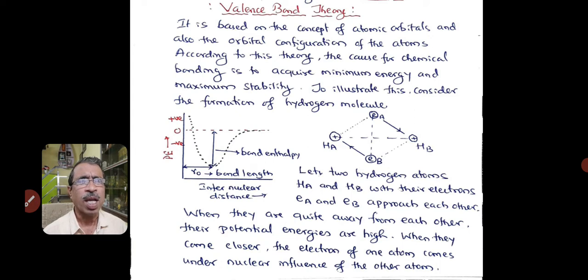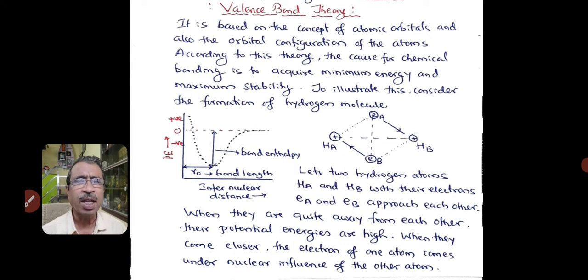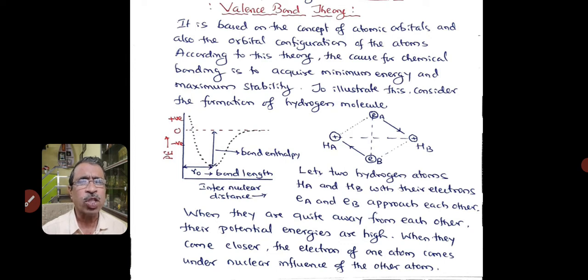To illustrate this, consider the formation of hydrogen molecule. The graph here shows potential energy versus the inter-nuclear distance. Let us consider two hydrogen atoms, HA and HB, with their electrons EA and EB, approaching each other.